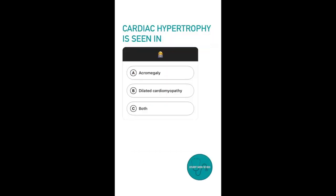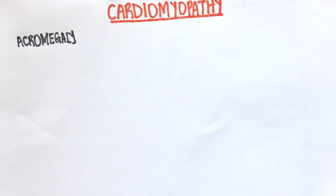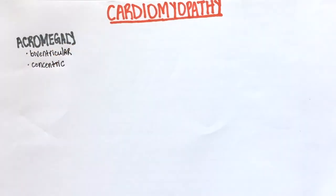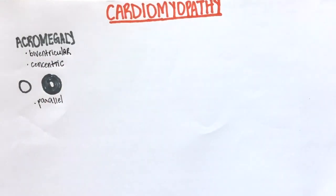Question number one. Cardiac hypertrophy is seen in option A, acromegaly; option B, dilated cardiomyopathy; option C, both. The answer to this question is both. In acromegaly, there is increased growth hormone activity. This makes everything bigger, even the heart. Both ventricles will undergo hypertrophy. In acromegaly, there is concentric hypertrophy, meaning that sarcomeres are added parallel to each other.